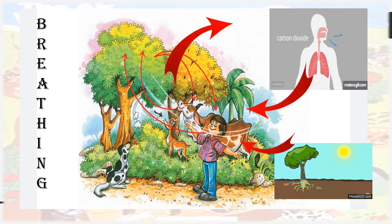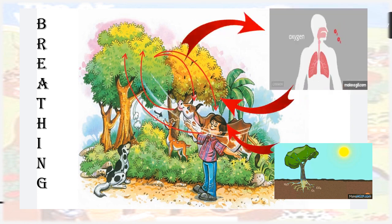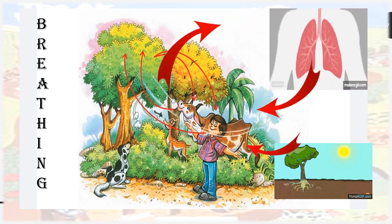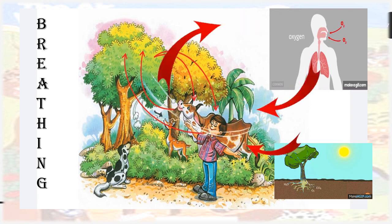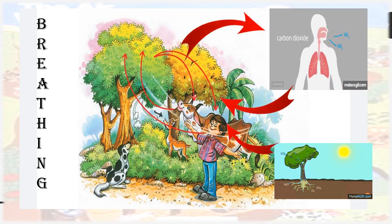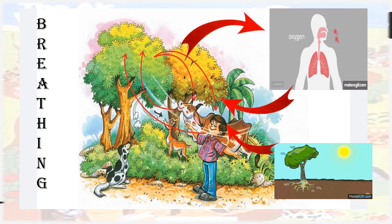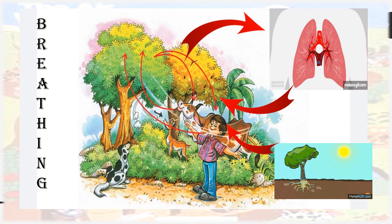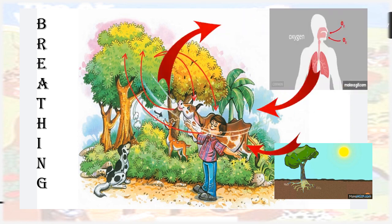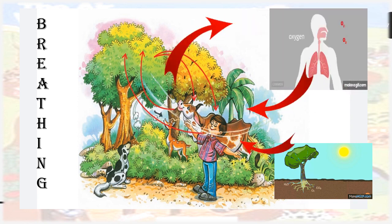Now let's know about the exchange of gases taking place among humans, animals and plants to maintain the balance of gases in the environment. Plants breathe in carbon dioxide and breathe out oxygen. This oxygen is used by humans and animals to breathe in. Humans and animals breathe out carbon dioxide, which is used by plants to breathe in. This is how the exchange of gases takes place among humans, animals and plants.